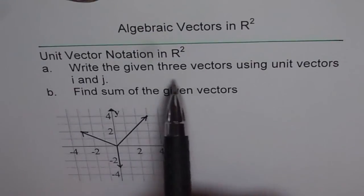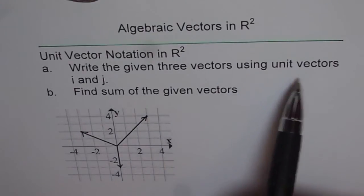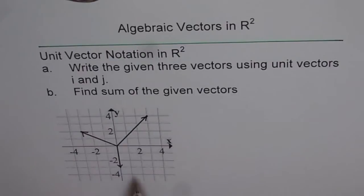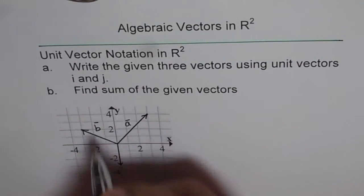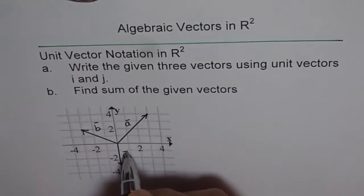Write the given three vectors using unit vectors i and j. So we have three vectors here. Let me name them. So let's say this is vector A for us. This is vector B. And this is vector C.